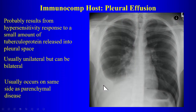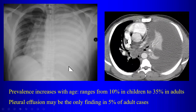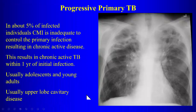Pleural effusion can be a manifestation of TB, from a hypersensitivity response, usually occurring on the same side as parenchymal disease. It belongs in the differential for unexplained pleural effusion especially in a young person. In 5% of adult cases, a pleural effusion is the only finding. Cultures take a long time to come back positive.